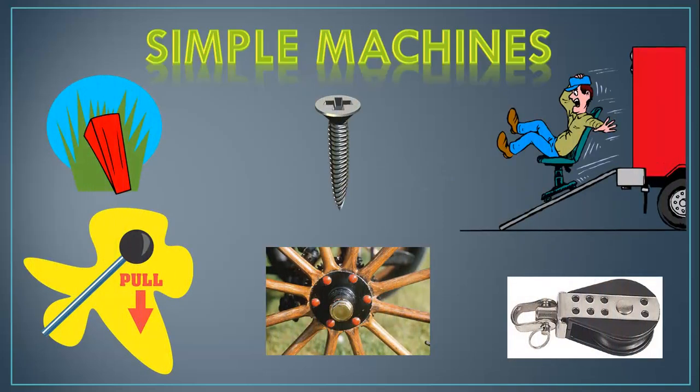There's a variety of simple machines that we can use to make work easier. When we say we're making work easier, we mean that it's requiring less of a force to have an object produce work. Let's go through each one of the simple machines on their own and discuss how they make work easier.